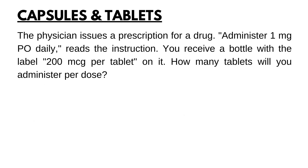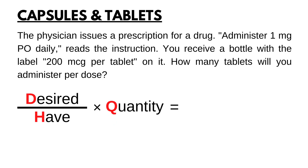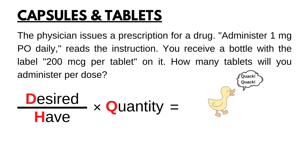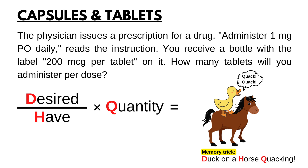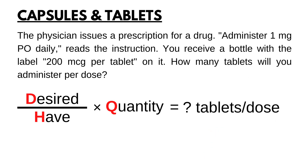The physician issues a prescription for a drug: administer 1 mg PO daily, reads the instruction. You receive a bottle with the label 200 microgram per tablet on it. How many tablets will you administer per dose? Set up the formula: desired over half times quantity. Use the memory trick to remember it — duck on a horse quacking. Now, add the unit answer: tablets per dose, because the question is asking how many tablets will you administer per dose? First, start plugging in the have and the quantity that was given to you: 200 micrograms per one tablet.